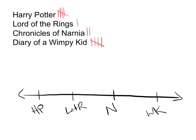And then you simply plot, remember this is called line plot data. So you plot your data above each one. So for Harry Potter, I have five votes, and I label those with X's. Sometimes people use dots. Lord of the Rings had one, Narnia had two, and Diary of Wimpy Kid had five as well. And then I am finished.